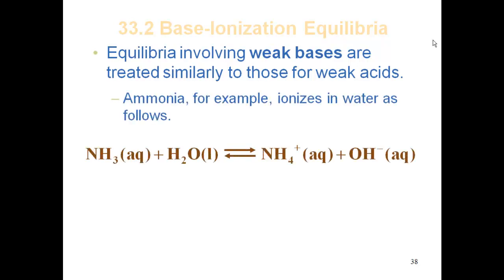Ammonia. What you've got to do is be able to write your reaction. We know that ammonia is the base in water and water is the acid. So what's going to happen is you're going to donate a proton. We're adding that H plus to that ammonia, so it gains its neutral species NH3. It gains that H plus, so now it's NH4 plus, and it forms hydroxide ions.